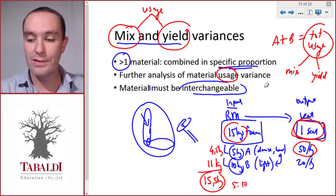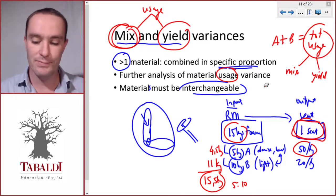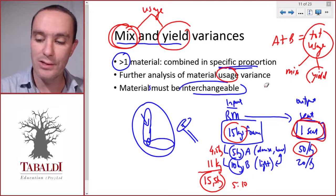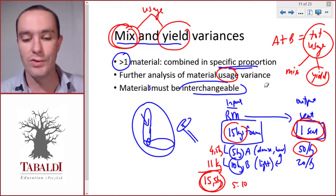We can see what part of the total usage variance is explained by changing the standard mix from 5:10 to 4.5:11, and what part of it was as a result of the yield - using more in total than what we should have used.